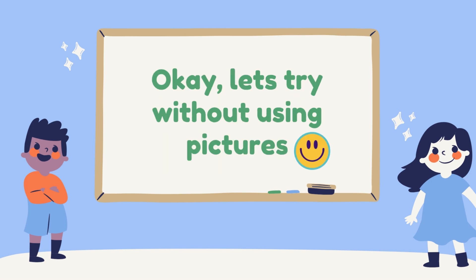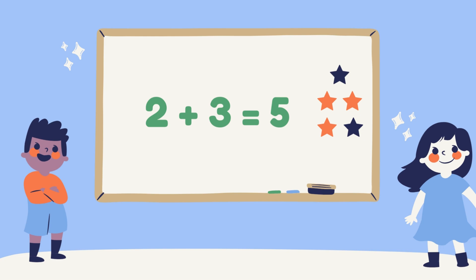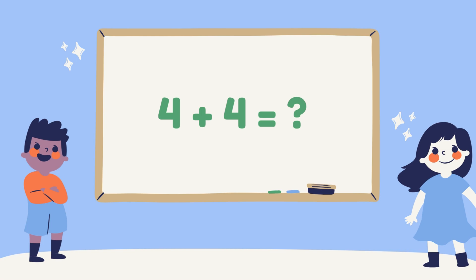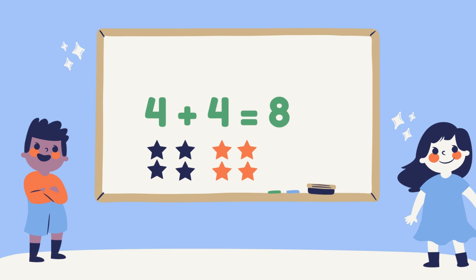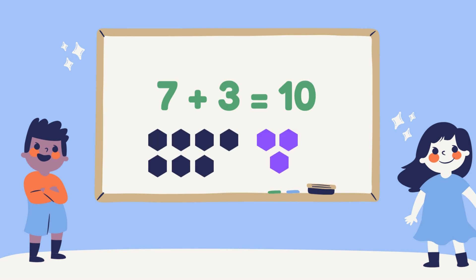Okay, let's try without using pictures. 2 plus 3. 2 plus 3 equals 5. 4 plus 4. 4 plus 4 equals 8. 7 plus 3. 7 plus 3 equals 10.